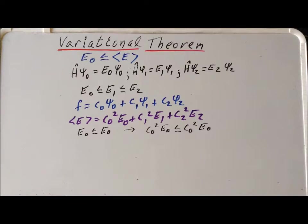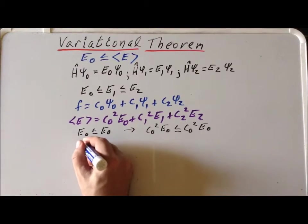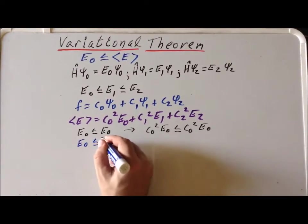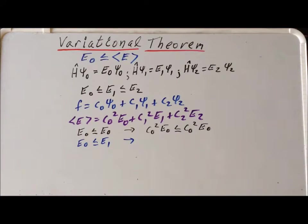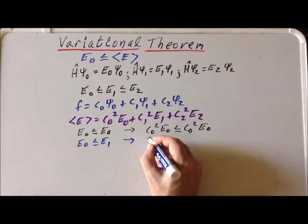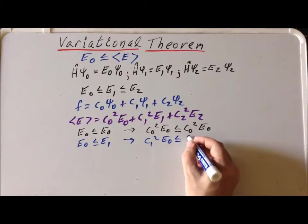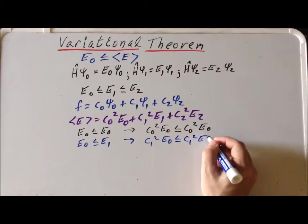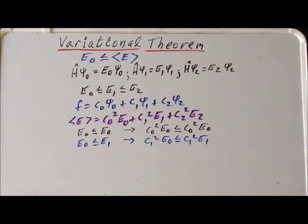Since we know that E sub 1 is greater than E sub 0, we can use that fact here. E sub 1 is greater than E sub 0. Now we multiply each side of this inequality by C sub 1 squared, so we get C sub 1 squared times E sub 0 is less than or equal to C sub 1 squared times E sub 1. We've simply taken each side of the inequality and multiplied by C sub 1 squared. Since C sub 1 squared is a non-negative number, it doesn't change the order of the inequality.